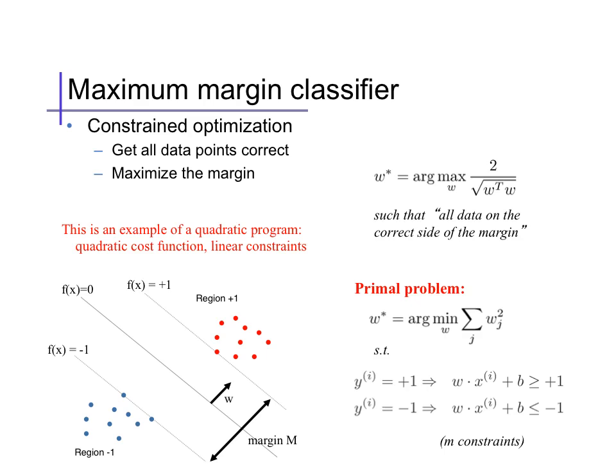For reference, we call this formulation, our max margin classifier, the primal problem, a point we'll contrast with later.